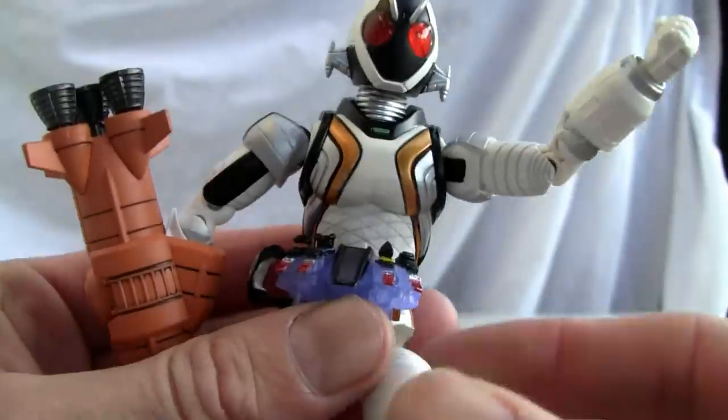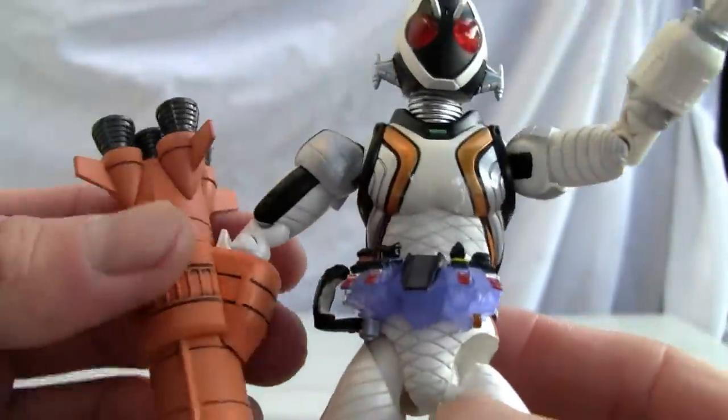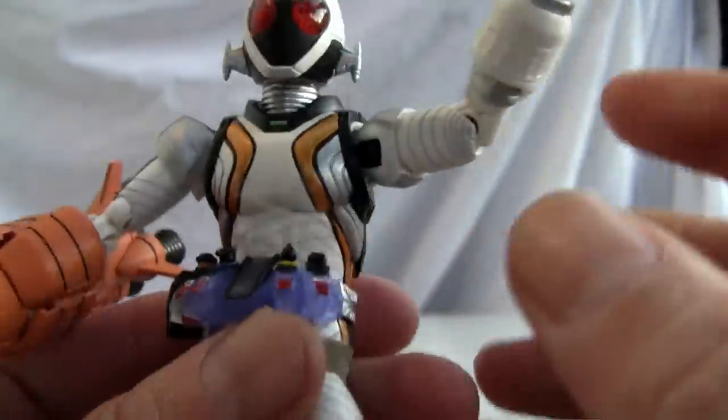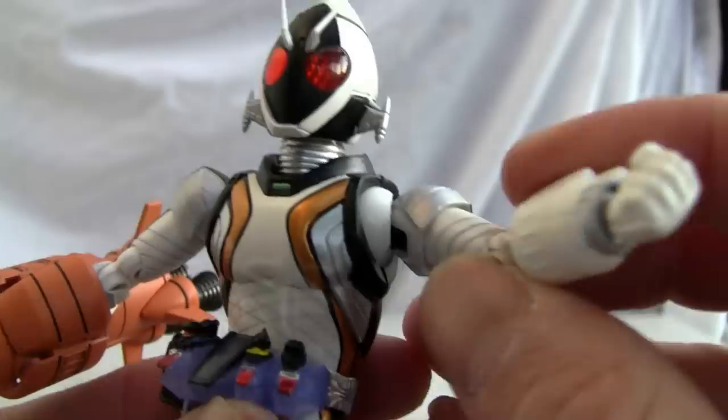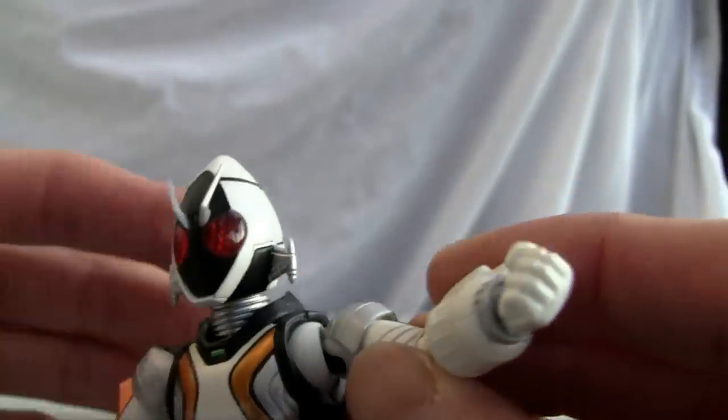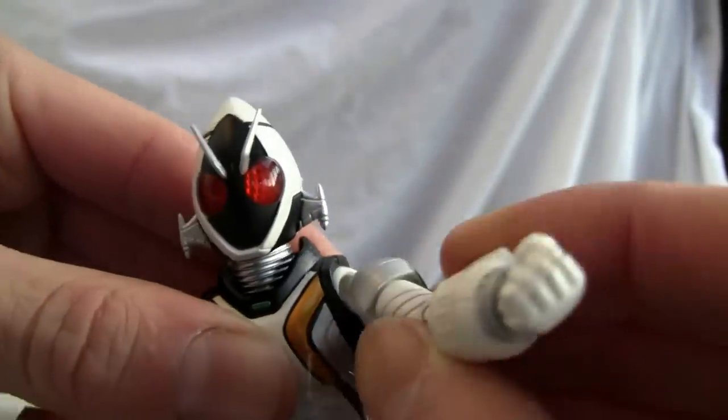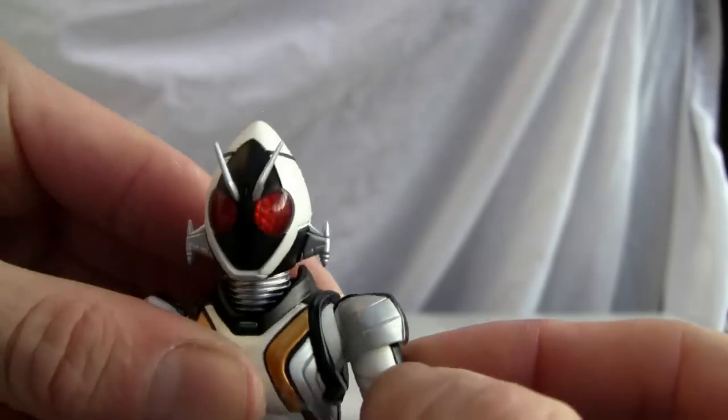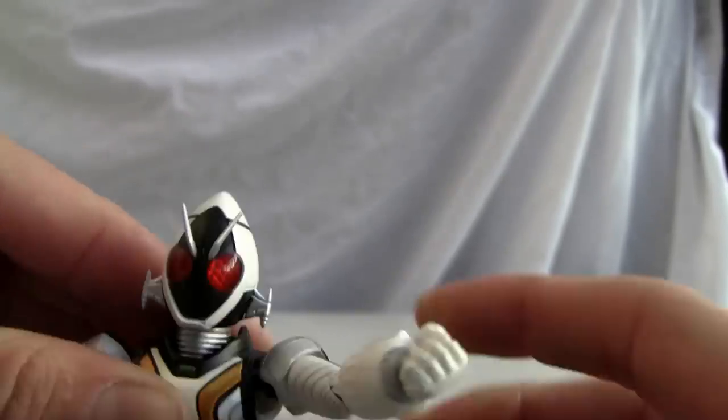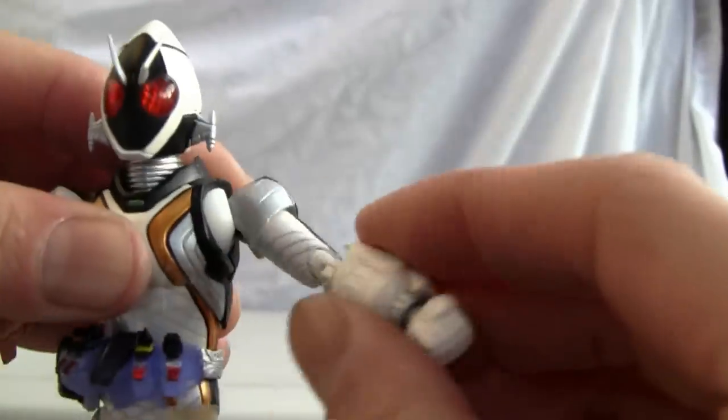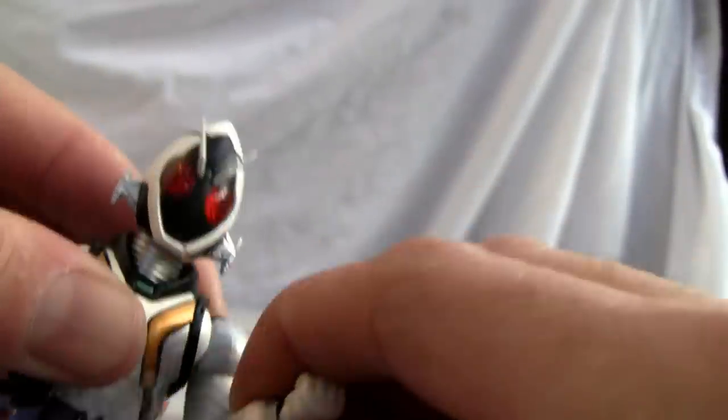There is a spare astral switch. I don't know too much about this. As far as articulation, you got a nice little swivel joint here in the shoulder so you can do a little shoulder shrug up and down. Shoulder does rotate 360, bicep swivel, double jointed arm, wrist swivel.